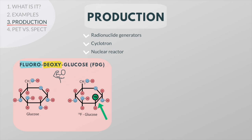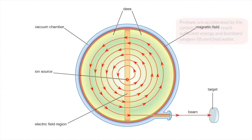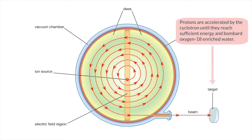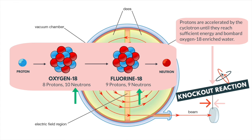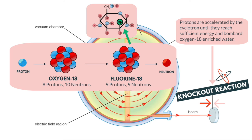Back to our first example about radioactive glucose. As with all radioactive fluorine-18 labeled tracers, the fluorine-18 must be produced on a cyclotron. Protons are accelerated by the cyclotron until they reach sufficient energy and bombard oxygen-18 enriched water. This collision causes a knockout reaction where an incoming proton knocks out a neutron in the oxygen-18, resulting in fluorine-18. The quickly decaying fluorine-18 is then collected and immediately attached to the deoxyglucose in a series of chemical reactions, resulting in the creation of FDG.